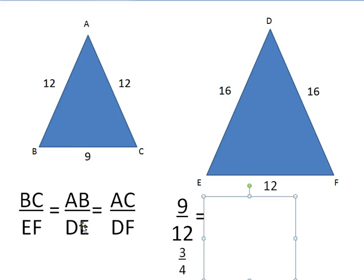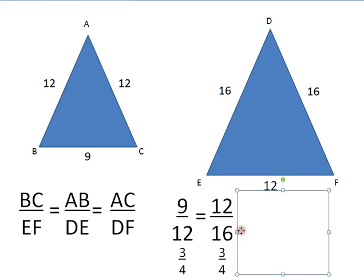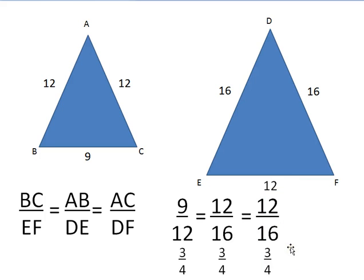Then I have AB over DE. Well, AB I can see is 12, and DE is 16, so I have 12 sixteenths. And my last side, AC is 12, and DF is 16. Well, yeah, we knew they were going to be the same, because those sides are the same. So it's 12 over 16 again. This is an isosceles triangle where two sides are the same.